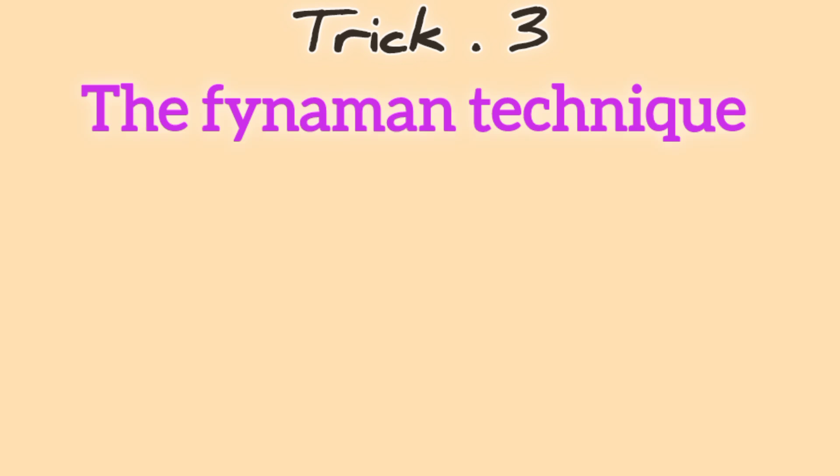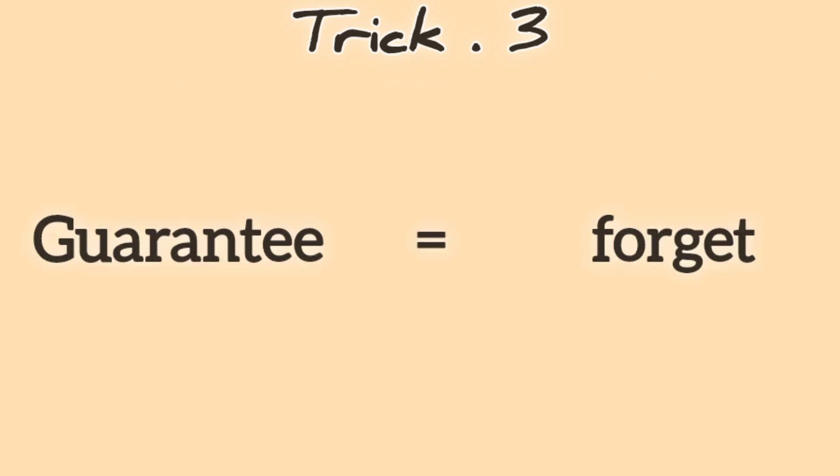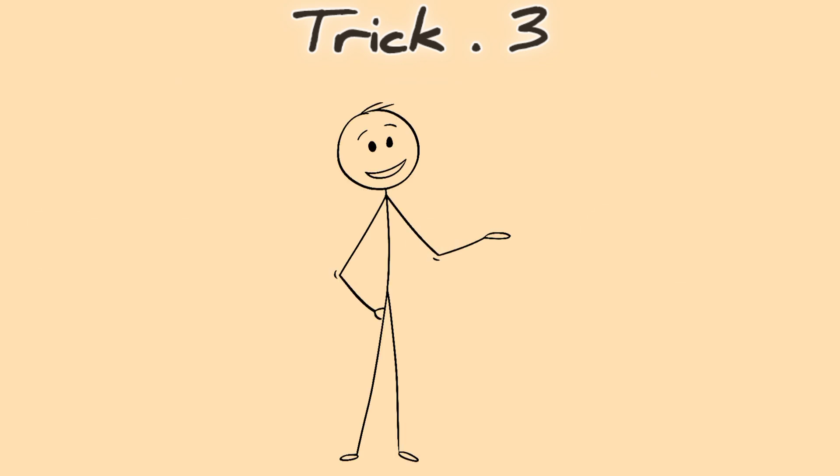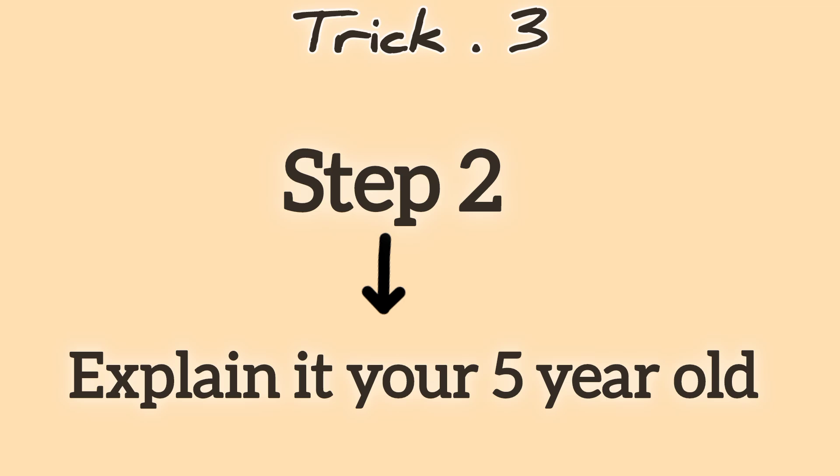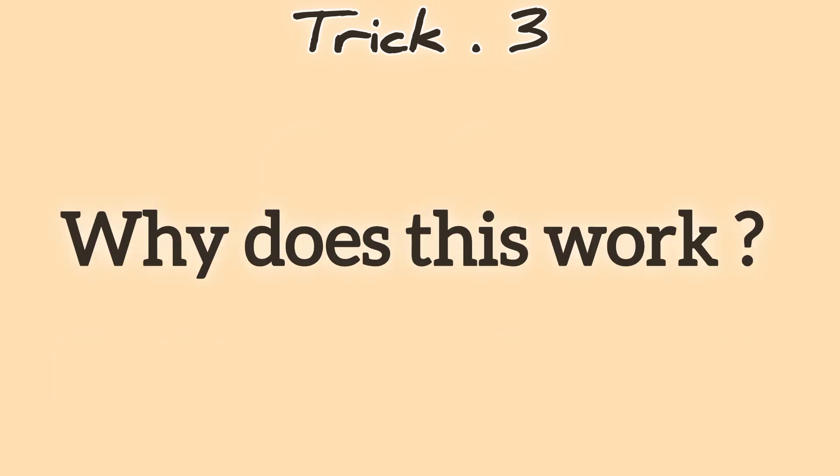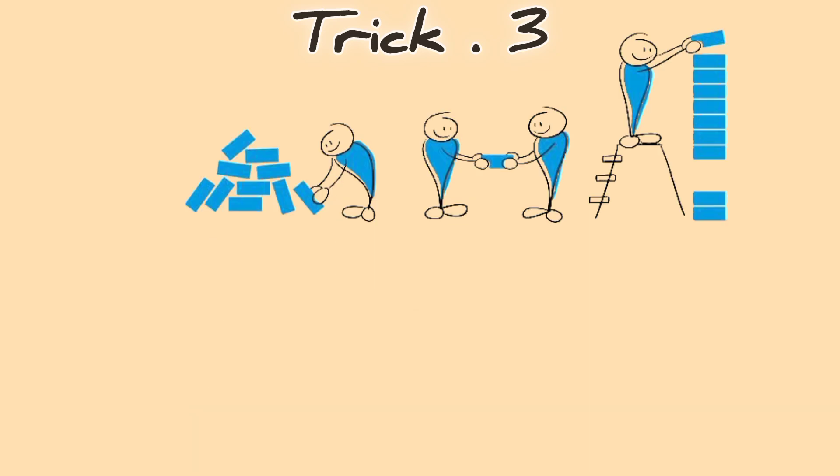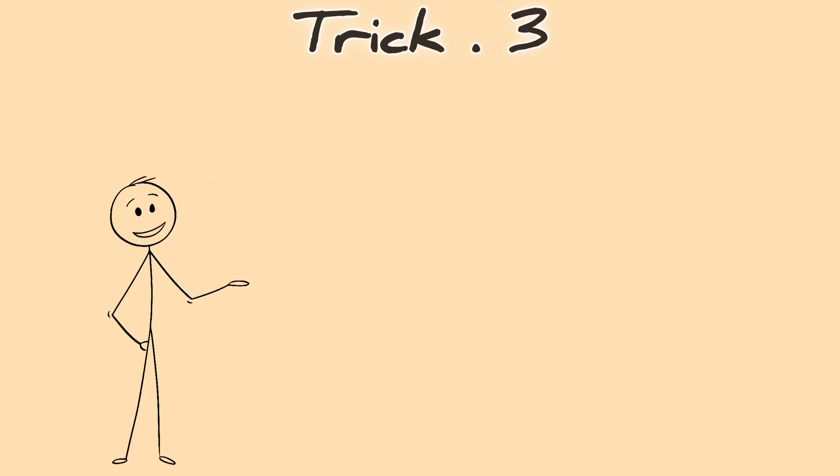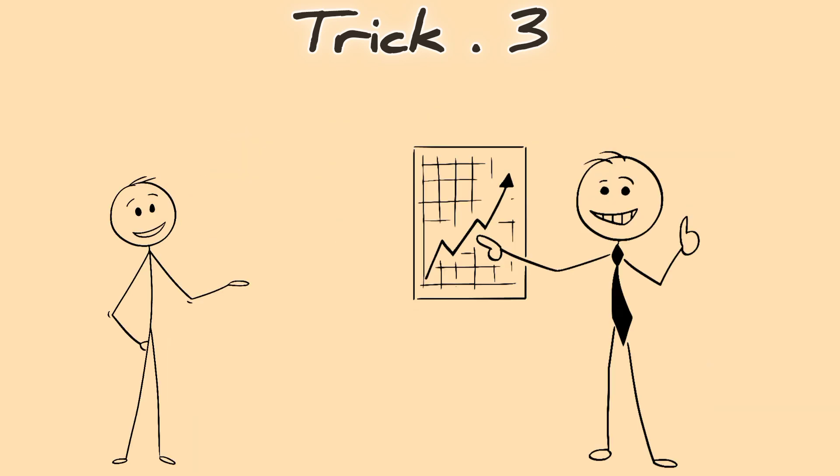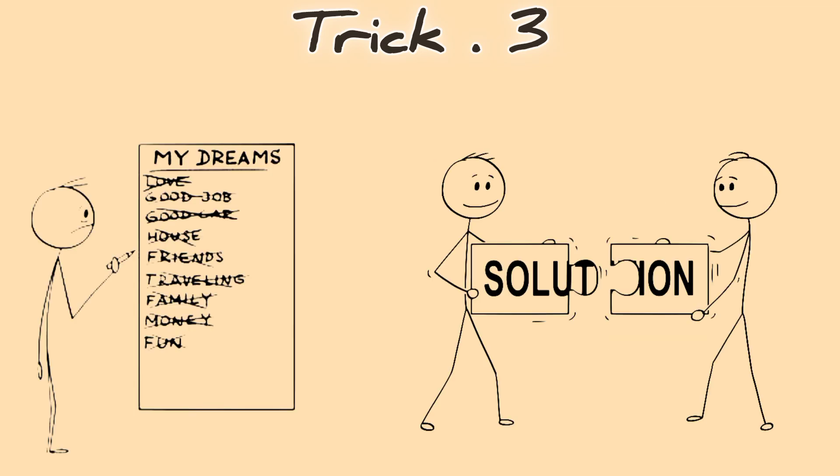Memory Trick 3: The Feynman Technique. Want to guarantee that you never forget something? Teach it. This is called the Feynman Technique, and it's so simple that it's almost unfair. Step 1: Learn a Topic. Step 2: Explain it as if you're teaching a 5-year-old. Why does this work? Because the moment you simplify something, you truly understand it. And when you understand it, you never forget it. If you can't explain something in a simple way, you don't know it well enough. So, before your next exam, try teaching the topic to a younger sibling, a friend, or even your pet. You'll be amazed at how fast your memory improves.